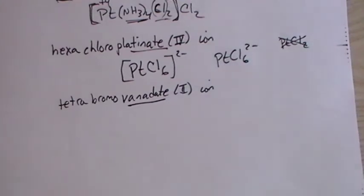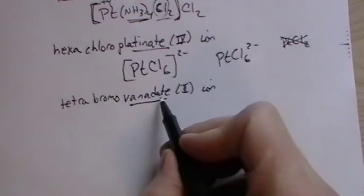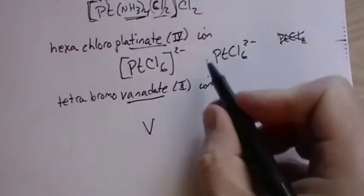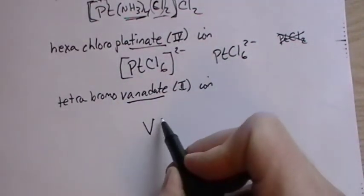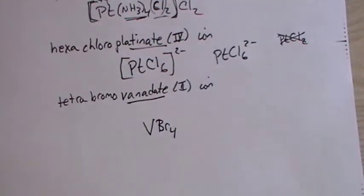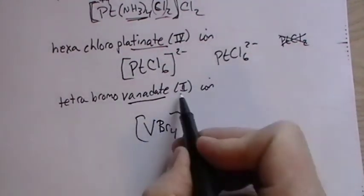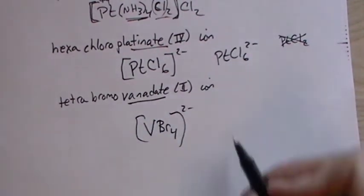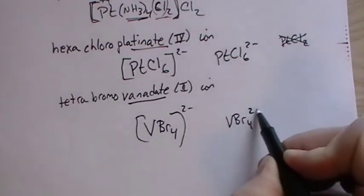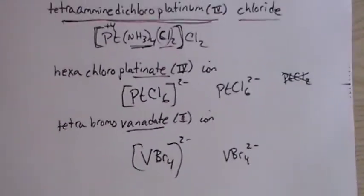Tetrabromovanadate. So that one is a little trickier. Vanadate. What would that be? Vanadium. And it's -ate, so that must mean that it ends with a negative sign. Tetrabromo. It's going to be a minus two again. And there's really no confusion if you do that as well.